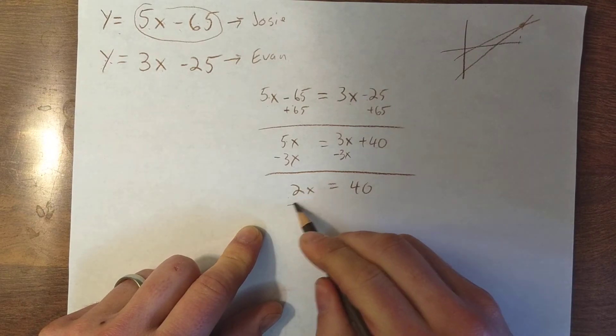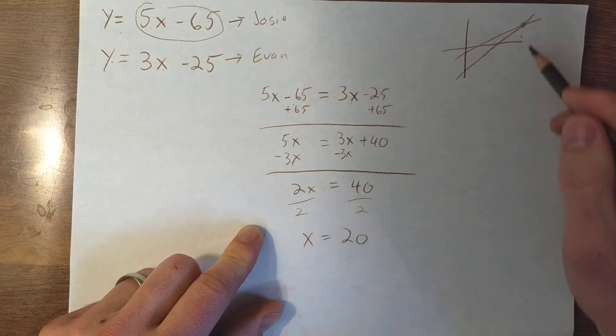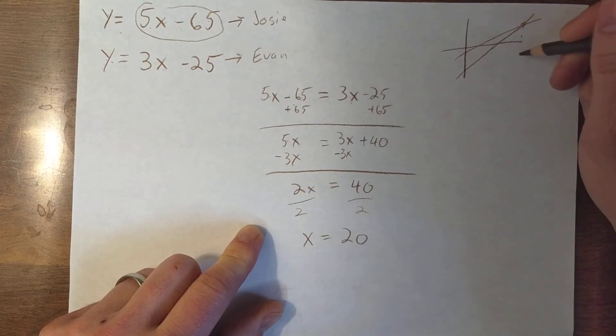Well, if 2x equals 40, I divide both sides by 2. x has to equal 20. So at this point, I know this is 20.